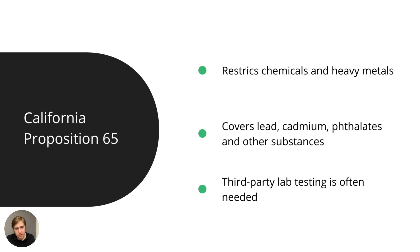If you want to sell in California, you need to comply — unless you use certain warning labels, but that's a different matter. The regulation sets outright bans and restrictions on chemicals and heavy metals, including lead, cadmium, phthalates, and other substances. In practice, you need to verify compliance through third-party testing. Ideally, you ask your supplier for test reports for all the different materials used to produce the shoe — such as leather or synthetic textile for the upper, and rubber for the sole.